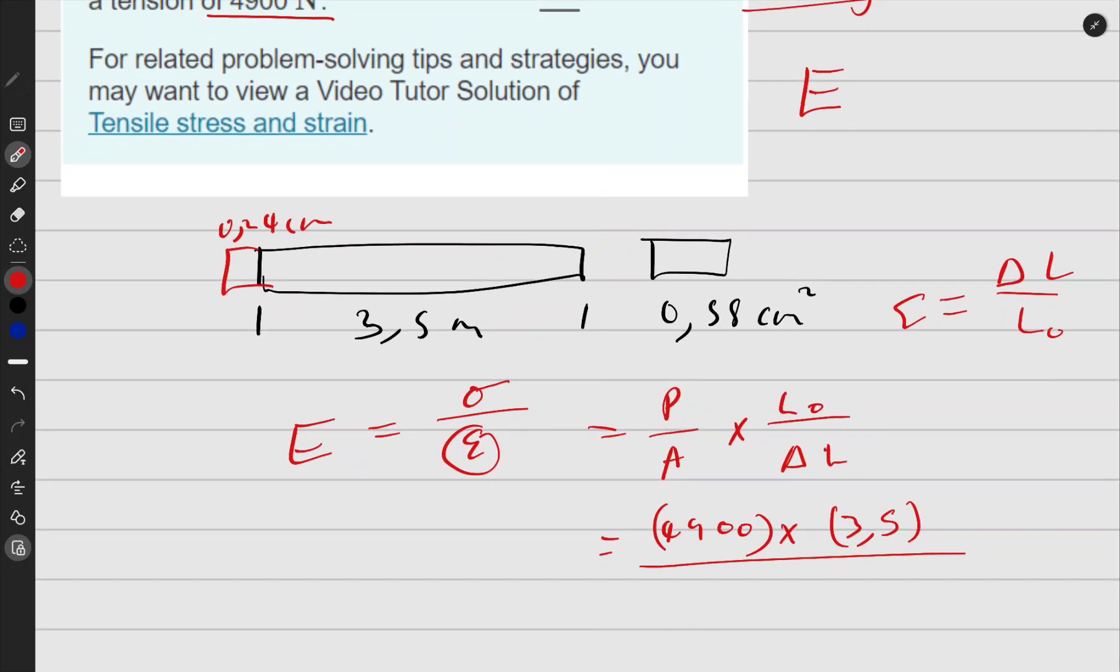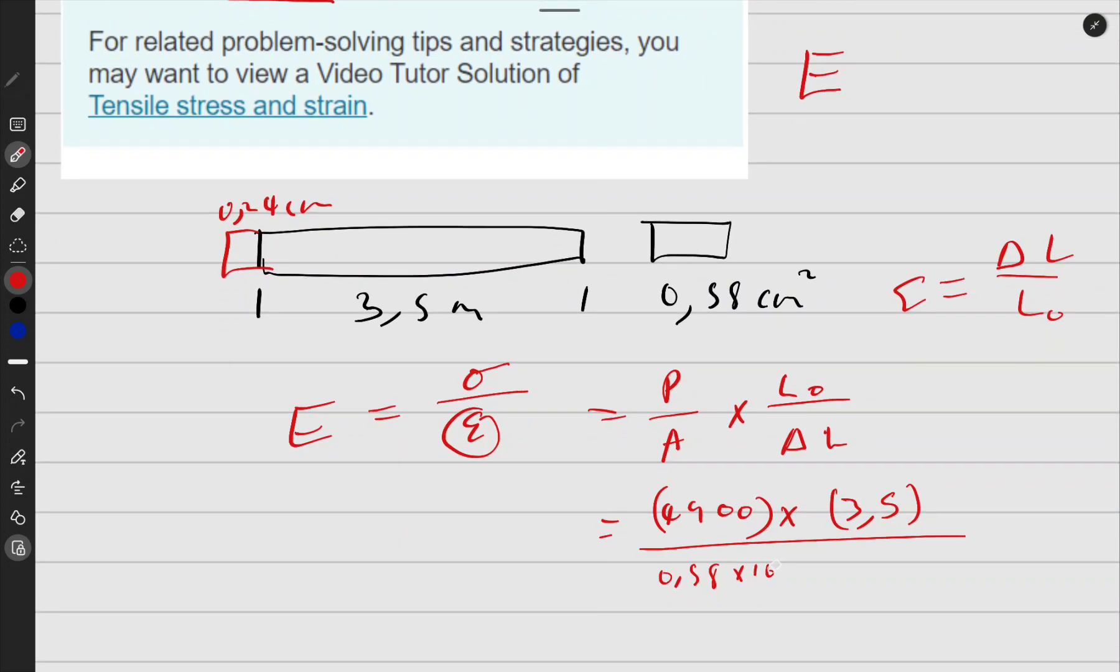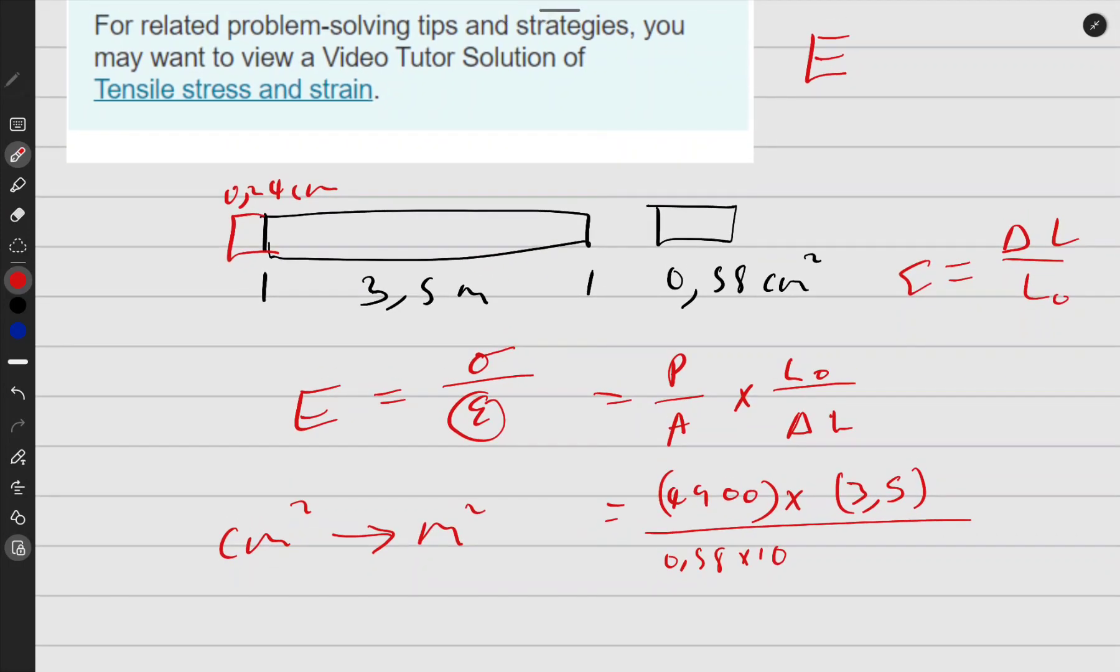And I keep my things in SI units, meters. So I'll have to write it as 0.58 times 10 to the negative 4, because I'm converting from centimeters squared to meters squared. If I was converting from centimeters to meters I'd have 10 to the negative 2, but because it's squared I'll have negative 4.